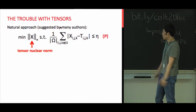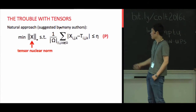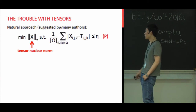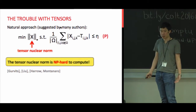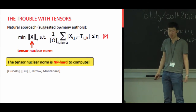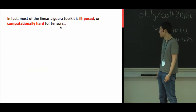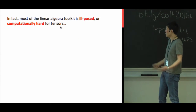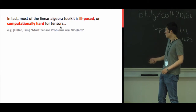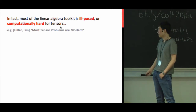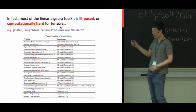How can we solve this problem? A natural idea is to minimize the tensor nuclear norm, as in the matrix case. Unfortunately, not only can we not minimize the tensor nuclear norm — we cannot even compute it. Most linear algebra techniques for tensors are either ill-posed or computationally hard. There is a well-known result that most tensor problems are NP-hard.